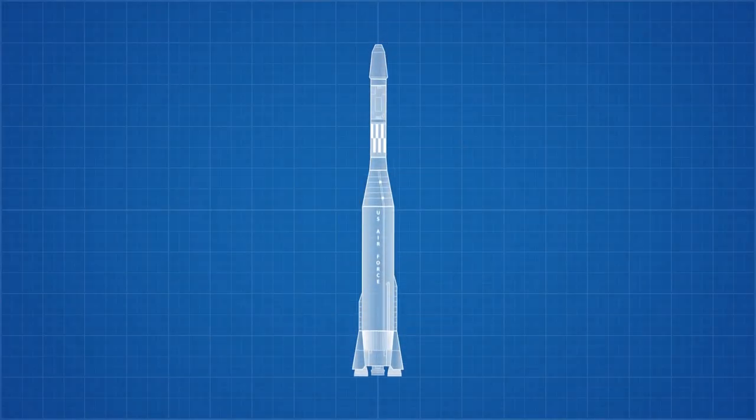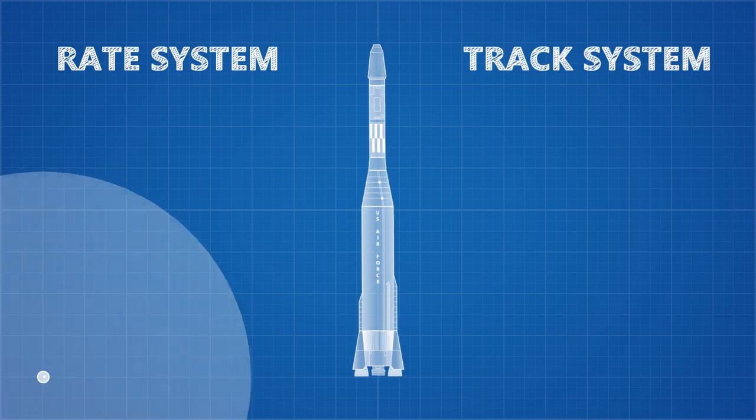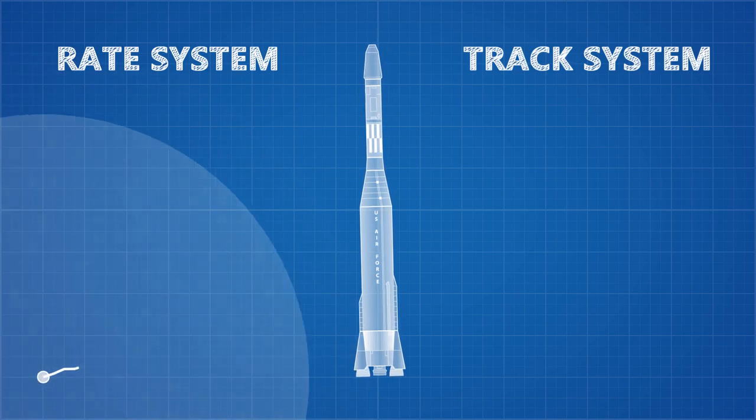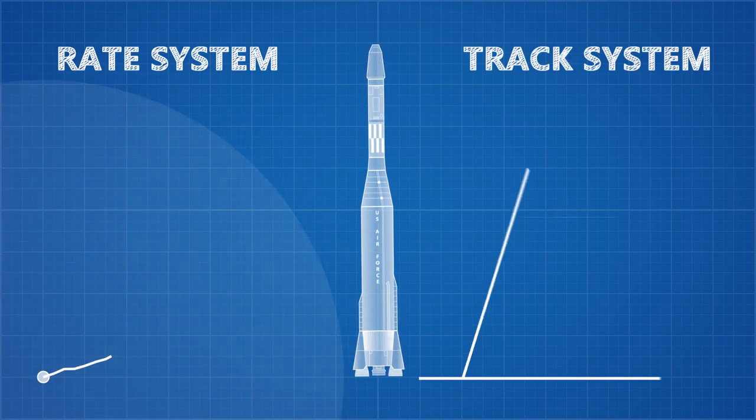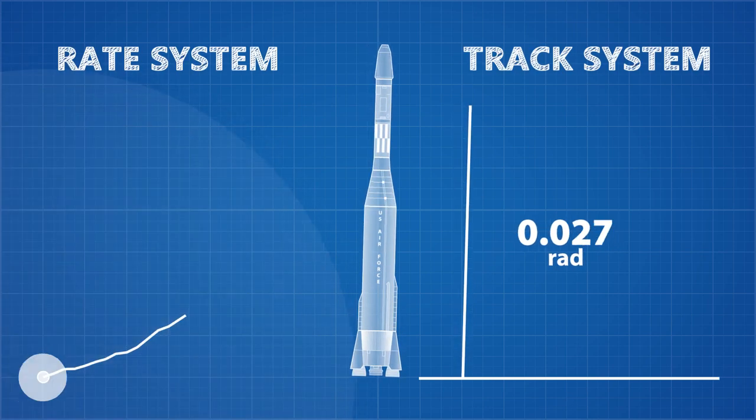The Atlas booster rocket used two radar systems to maintain its trajectory along its intended route. A rate system which measured its velocity using Doppler shift measurements from a ground based beacon, and a track system which measured its distance and angle relative to an antenna located near its launch site.